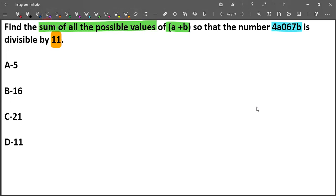Using the divisibility rule for 11: (a+6+b) - (4+0+7) = 11k.